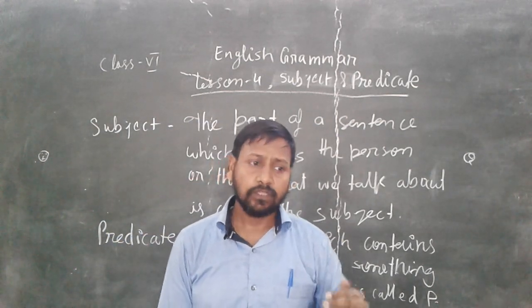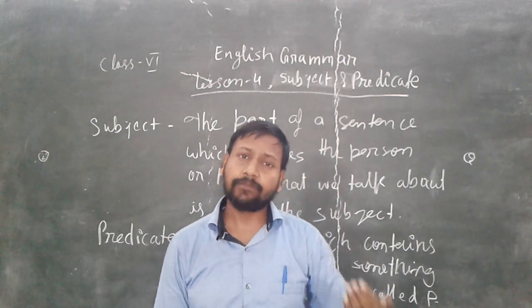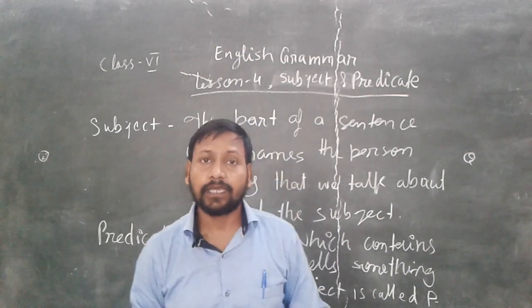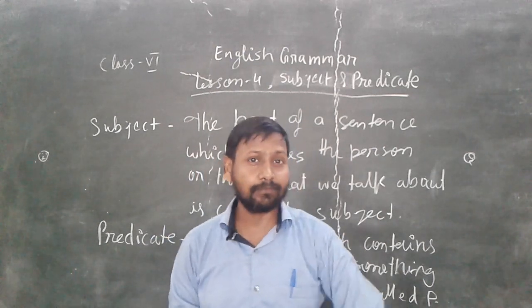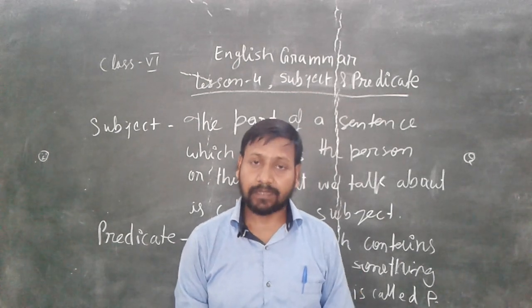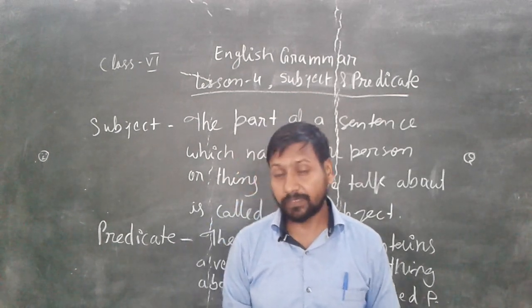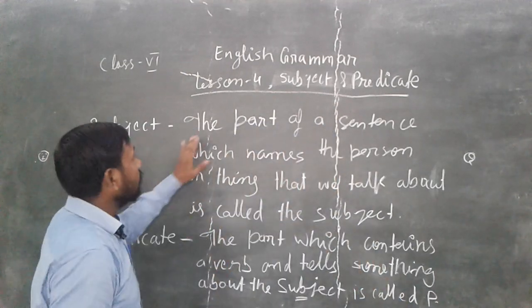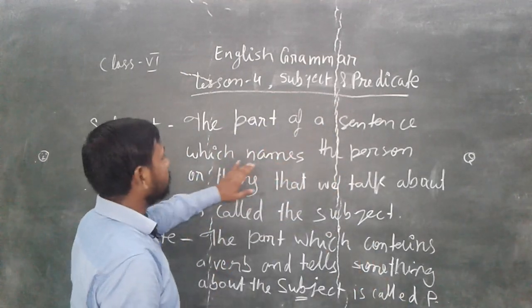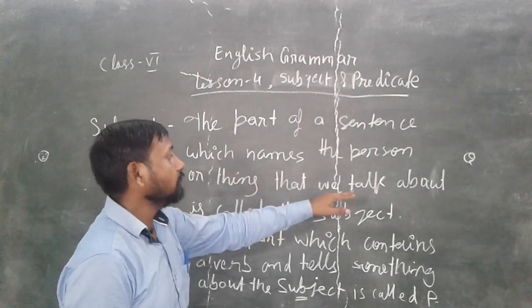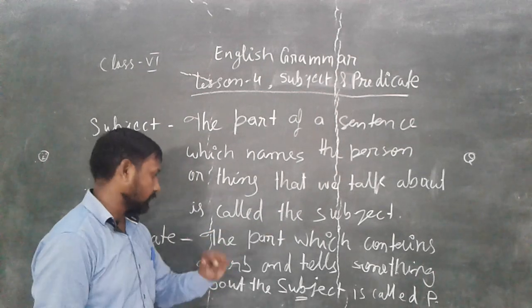What is the subject and predicate? Subject is that thing which starts any work and which can be a name or which can be a subject. Subject like I, you, they, we, he, she, it, name, who. These are subjects which start any work and it could be any name. Now the part of a sentence which names the person or thing that we talk about is called a subject.